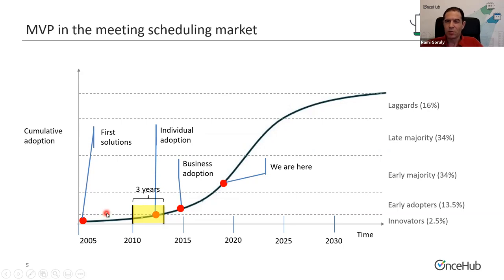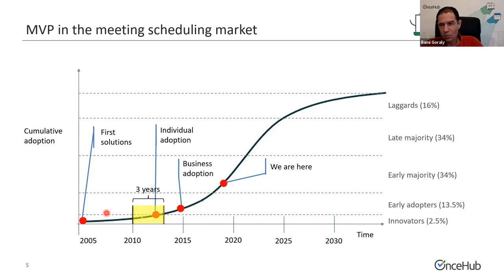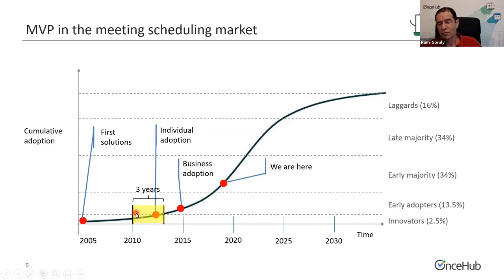We started earlier and had to sit and wait. We used that time to build the product, but it is a long time to wait. Other companies that started with us and were VC-funded just couldn't weather this long storm. And the thing is, it's waiting with uncertainty — there isn't any guarantee that the market will eventually materialize. Some markets never materialize. So the timing of the MVP is critical and something you should think about very seriously.